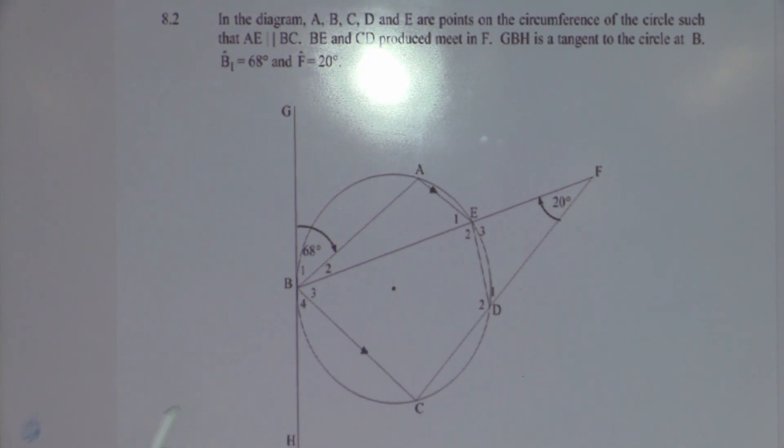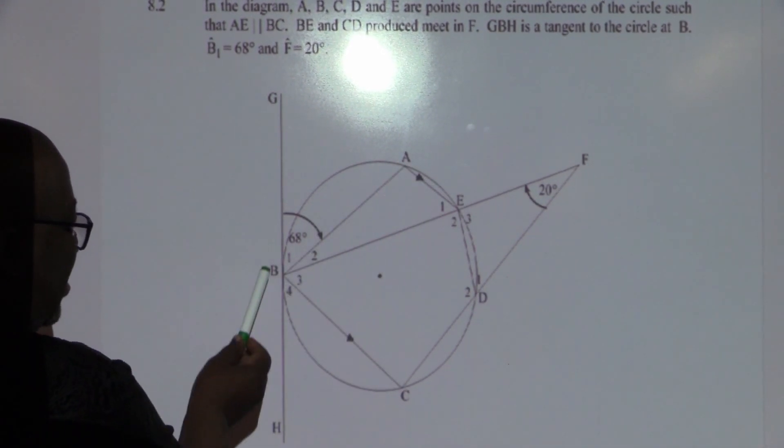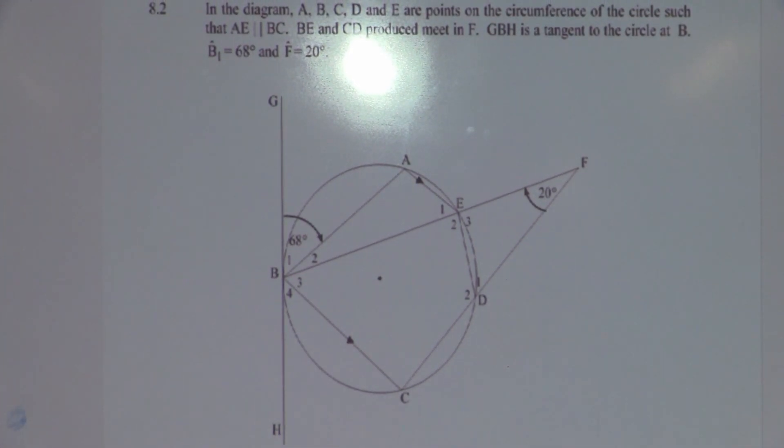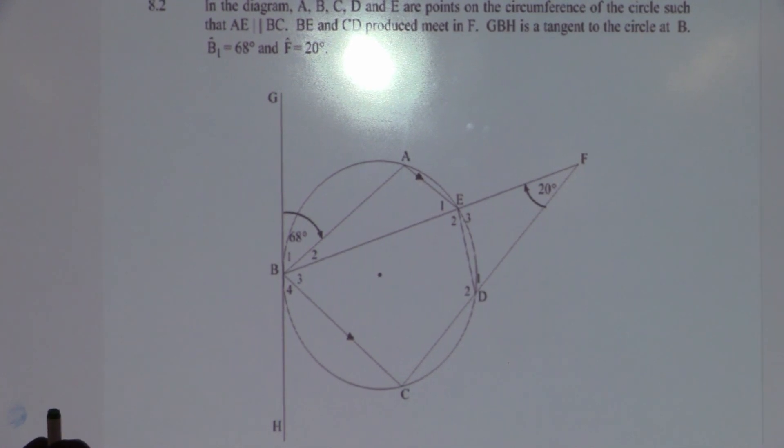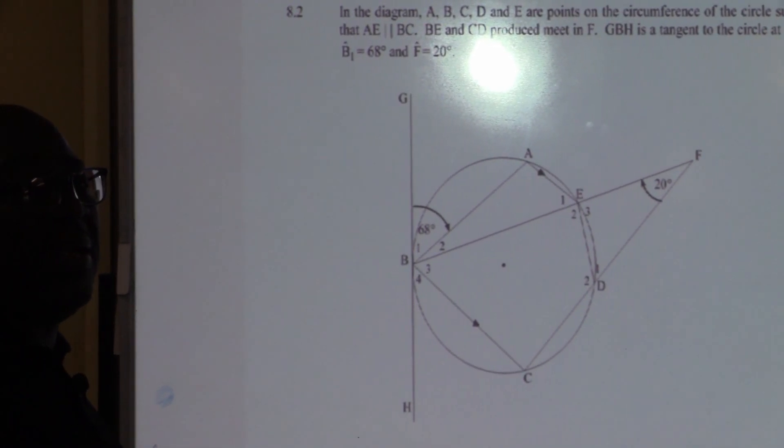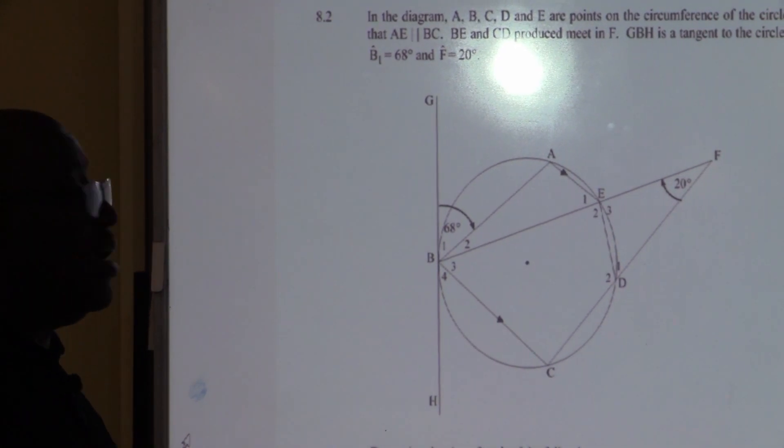I see parallel lines. I don't see a triangle. So, it's not the theorem that says a line drawn parallel to one side of a triangle. So, it is grade 8, grade 9. Where you need to see the alternate angles, the corresponding angles, the co-interior angles.